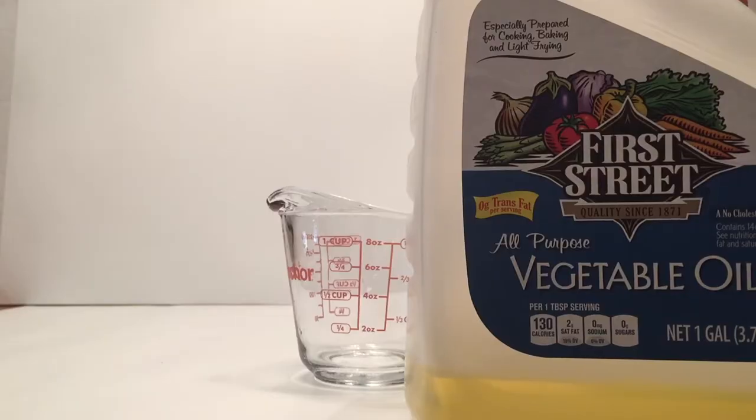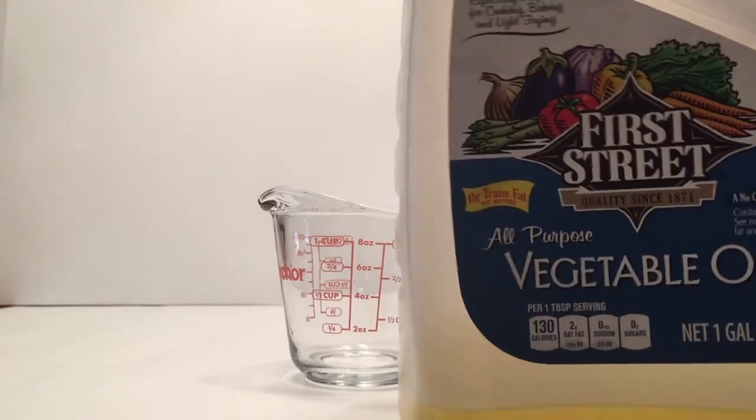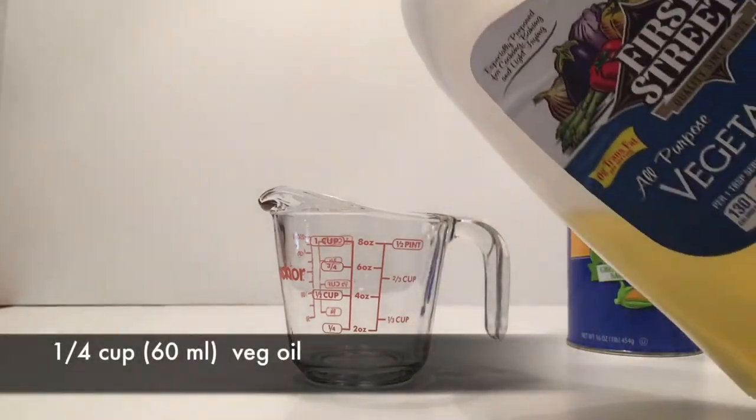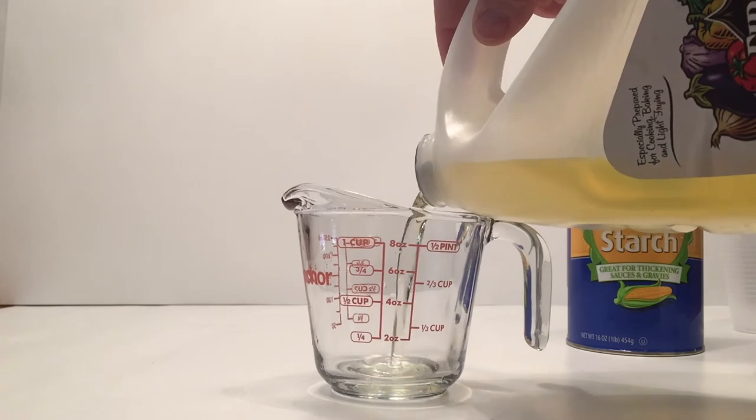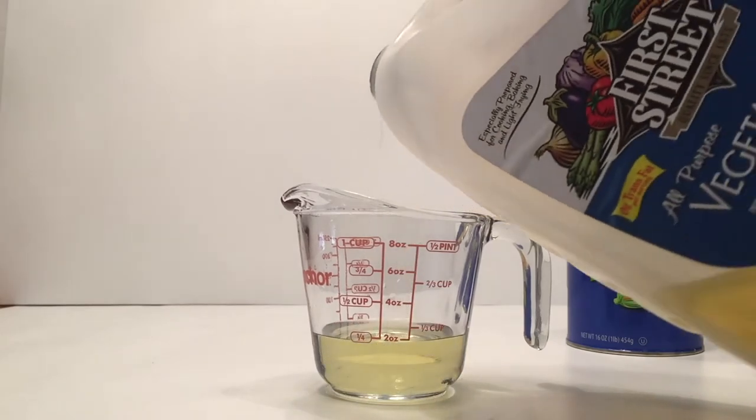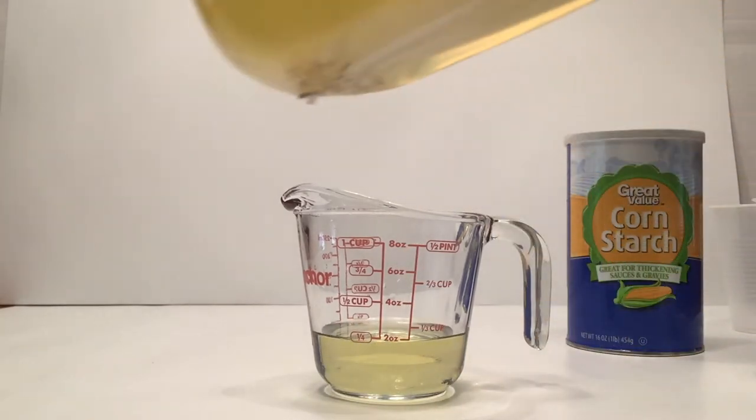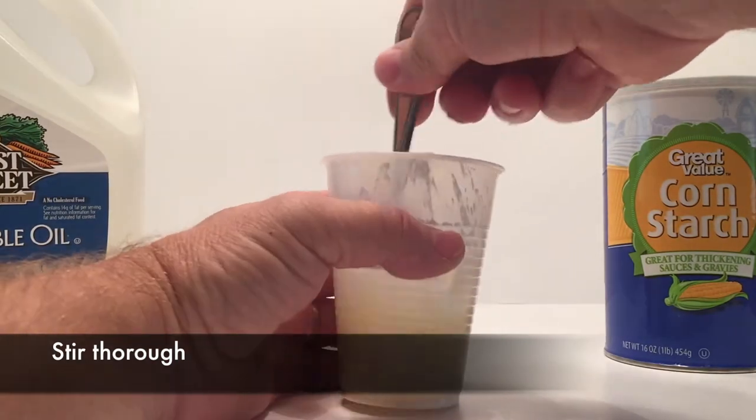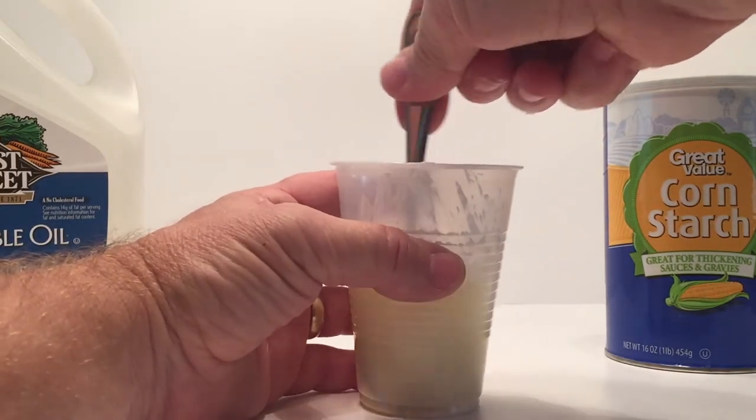Then you're going to take your vegetable oil and do the same thing. You're going to do a quarter cup of the vegetable oil, 60 milliliters. And once we get that, then we're going to combine them in the same cup and stir them until they become a liquid.